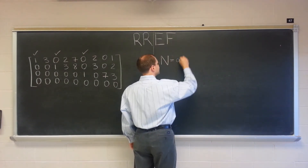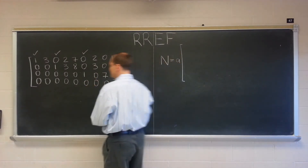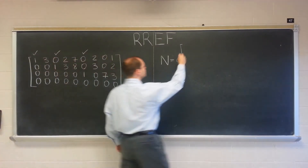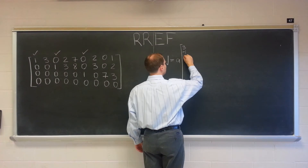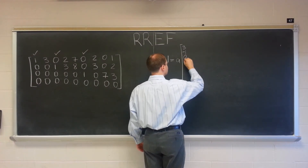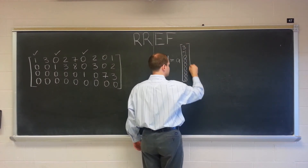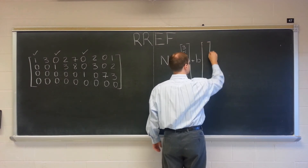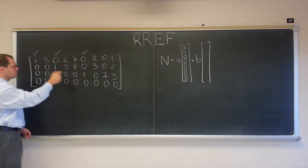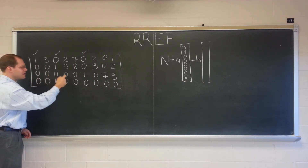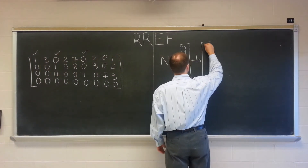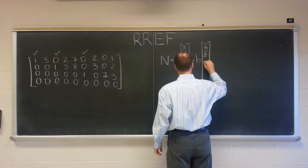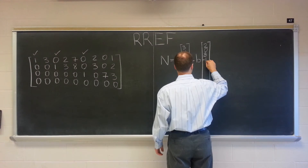So here's my null space. It would be any constant A times: three of the first column and minus one of the second column — so the vector is (3, -1, 0, 0, 0, 0, 0, 0, 0). The next element in the null space comes from the next non-pivot column, which is twice the first, three times the third, and minus one times the fourth — so the vector is (2, 0, 3, -1, 0, 0, 0, 0, 0).